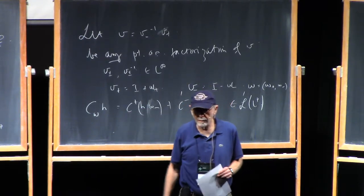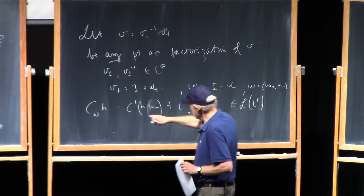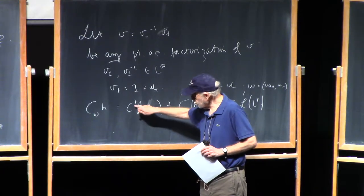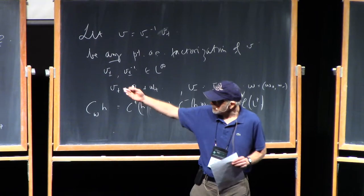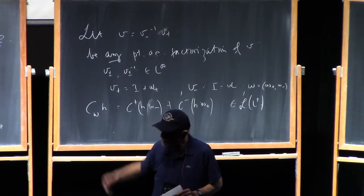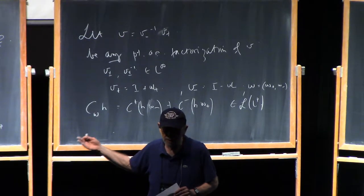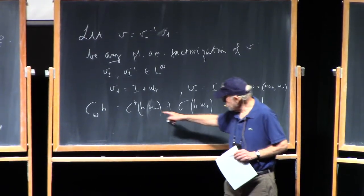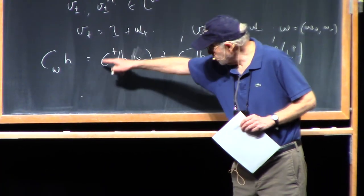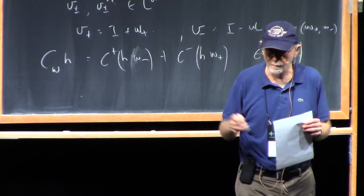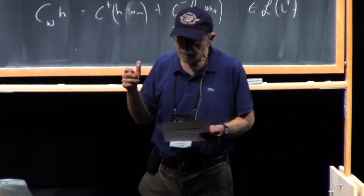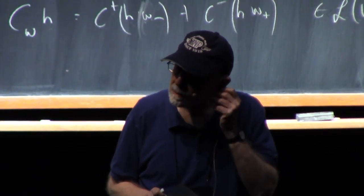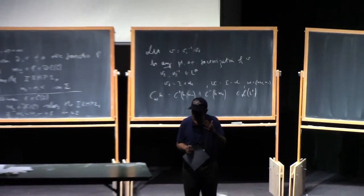Everything is matrix-valued, of size K by K. You take your function H, you multiply it from the left onto W−, then you take C+ of that. C+ is applied component-wise if H is a matrix. Because W− and W+ are bounded, and C+ and C− are bounded, this makes for a bounded operator. And as stated in the very beginning, a Riemann-Hilbert problem analytically is all about solving singular integral equations on the contour — and we're getting closer to that point.